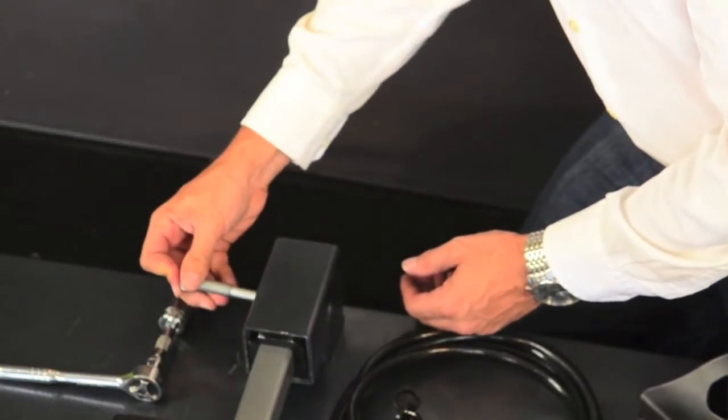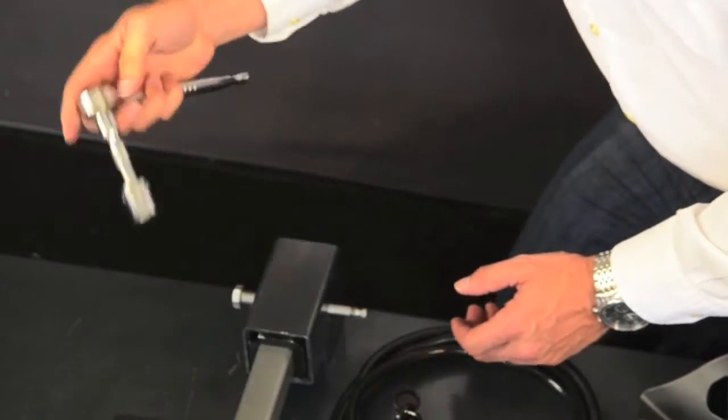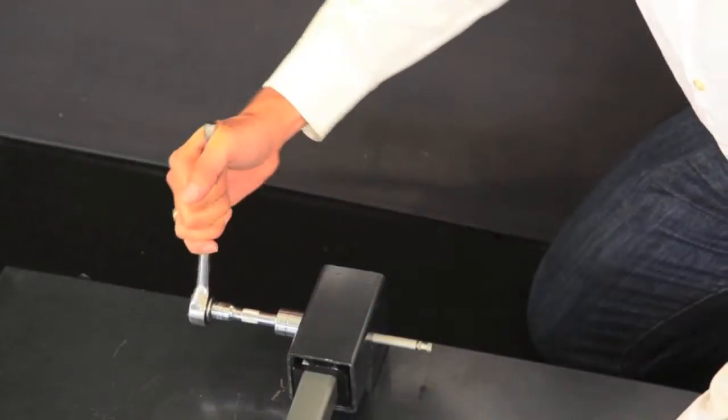The threaded locking hitch pin when installed will tighten the receiver bar against the side of the receiver, eliminating any wobble.